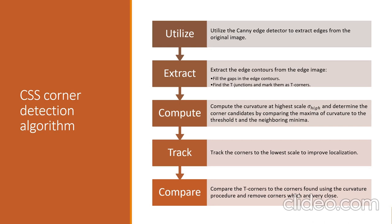This is the algorithm proposed by the author for corner detection in the CSS corner detector. First, we utilize the Canny edge detector to extract the edges. After that, we extract the edge contour by filling gaps in the edges, and simultaneously find T-junction corners. Then, we compute curvature at high scale sigma and determine corner candidates by comparing the maximum curvature to threshold T and neighboring minima. After that, we track the corners to lower scale to improve localization. Finally, we compare T-junction corners and CSS corners and remove false corners or duplicate detections. My friend Nagasai will continue with the implementation aspects and results.